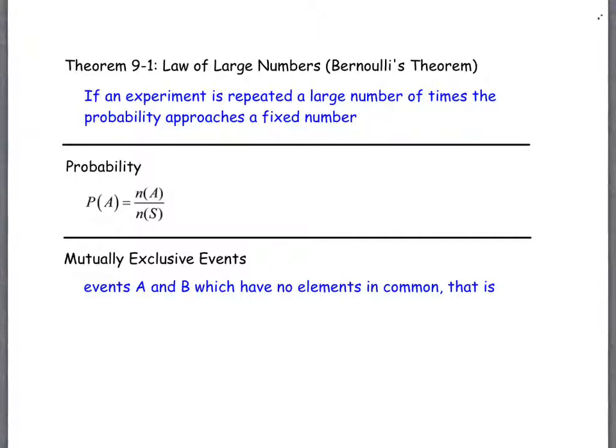The law of large numbers, this is Bernoulli's theorem, says that if an experiment is repeated a large number of times, then the probability approaches a fixed number. So when we talk about having a one-sixth chance of rolling a two on the die, what we mean is that over a large number of times when we roll that die, about one-sixth of the times, it's going to come up two.